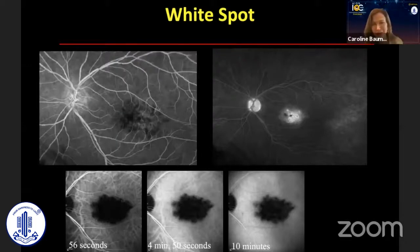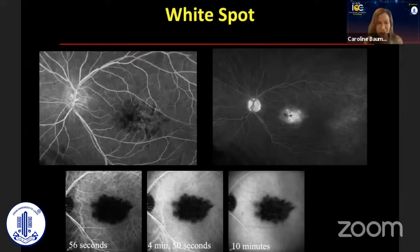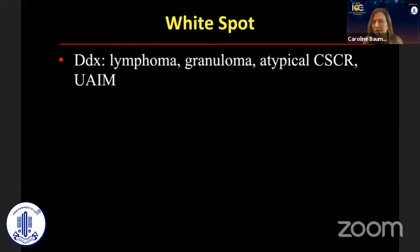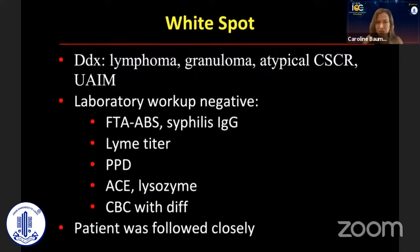Here's the fluorescein — we see some modeled early hyperfluorescence and late leakage. It is kind of interesting that the nerve is hot, but I love this ICG because it is like no flow. It is black in this lesion. So at this time, our differential included lymphoma, granuloma, and atypical choroidal osteoma. I always think about lymphoma in these strange lesions, and we did a workup and everything was negative.